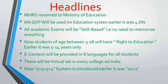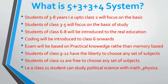Next is the 5+3+4 system. In this system, students aged 3 to 8 years — that is, up to class 2 — will focus on the basics of education: how to play, how to study, how to sit. Students of class 3 to 5 will focus on the basics of study, such as how to read a book, how to go to school, and similar foundational activities.